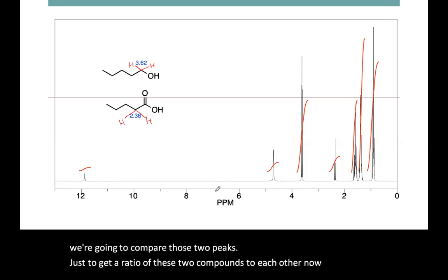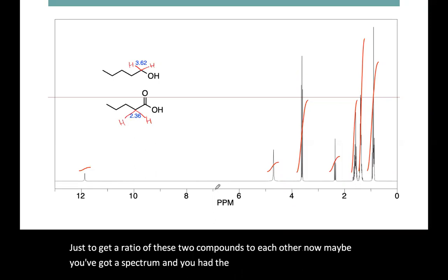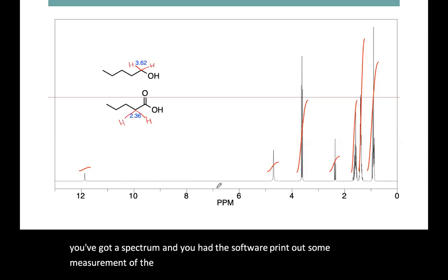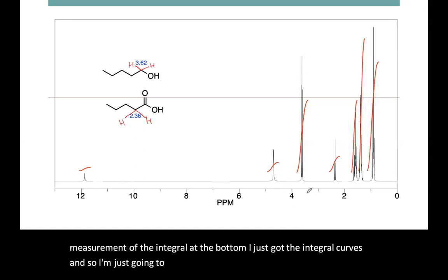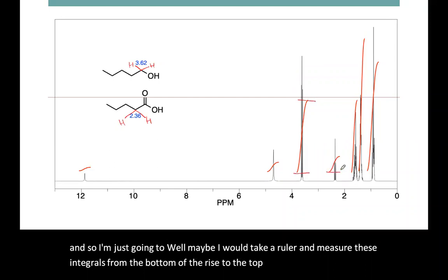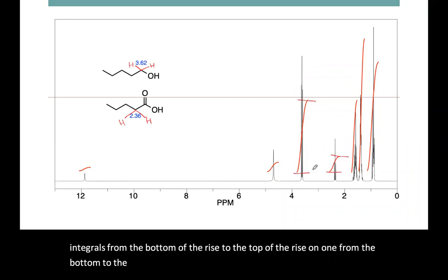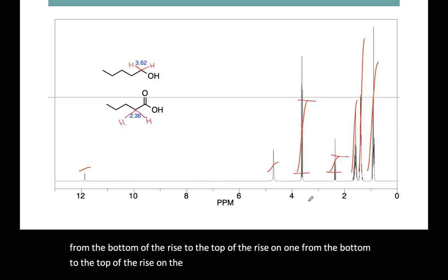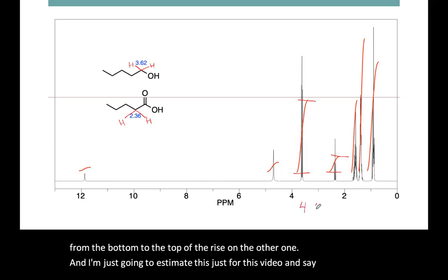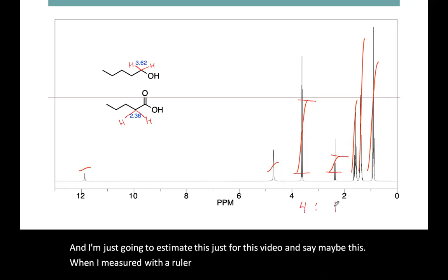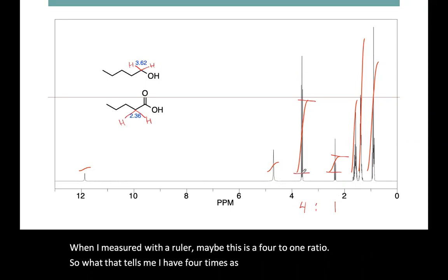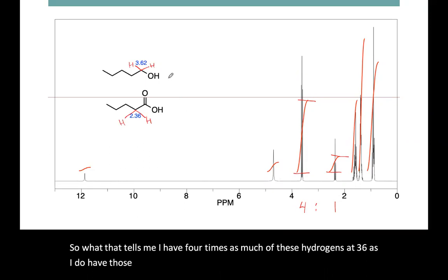Now, maybe you've got a spectrum and you've had the software print out some measurement of the integral at the bottom. I've just got the integral curves, so I'm going to take a ruler and measure these integrals from the bottom of the rise to the top of the rise. I'm going to estimate and say maybe this, when I measure with a ruler, is a four to one ratio. So what that tells me is I have four times as much of these hydrogens at 3.6 as I do of those hydrogens at 2.3 parts per million.